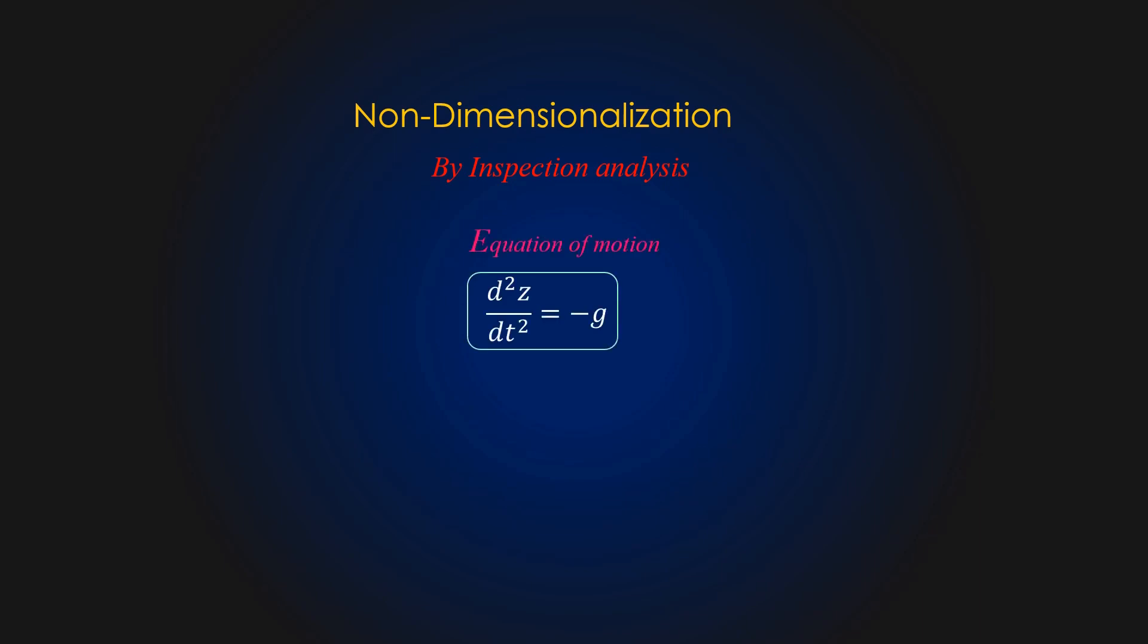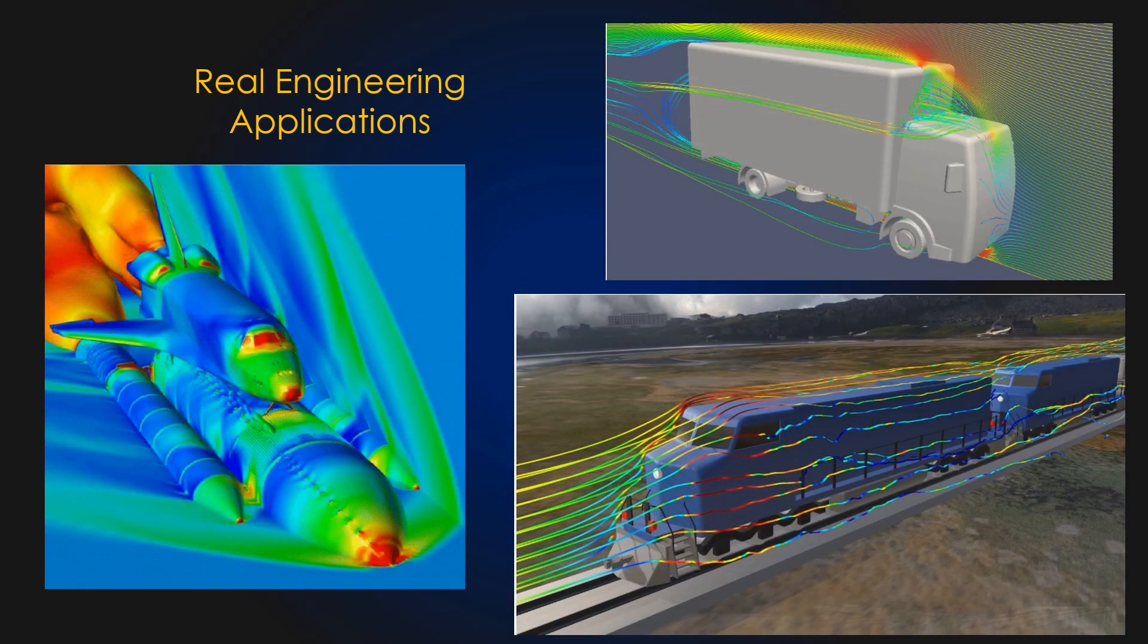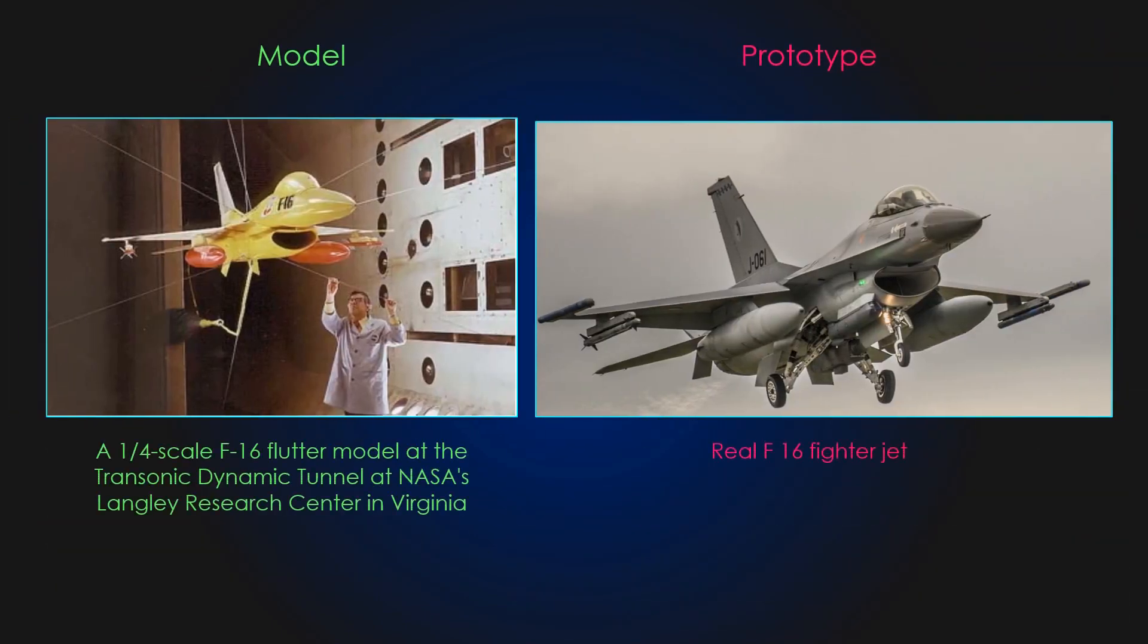Non-dimensionalization of an equation by inspection analysis is useful only when one knows the equation to begin with. However, in real life engineering problems the equations are either not known or too difficult to solve, where experimentation is the only method of obtaining reliable information. In experiments, tests are performed on a geometrically scaled model rather than on a full scale prototype. To properly scale the results of a model to a prototype, dimensional analysis is used.